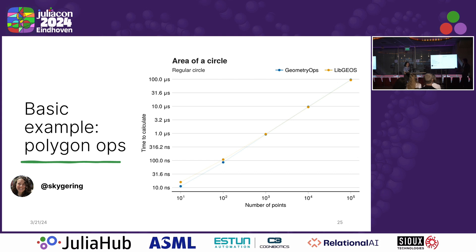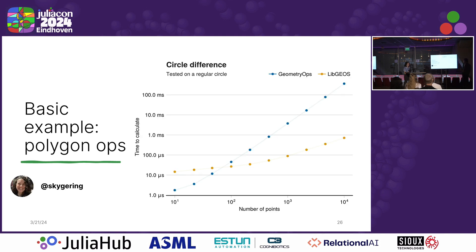Talking about polygon operations, here is where we don't quite beat C — orange is C and blue is GeometryOps. This is computing area on just a circle. You can see that we get rid of some overhead for really small polygons, and as computation becomes larger they equalize. For really small polygons, blue is GeometryOps and orange is libgeos. You can see that for small polygons on the order of 10 to about 100 points, you don't really need the caching that GEOS does. After that, GEOS's caching really improves performance. The beauty is you can choose either depending on your use case.